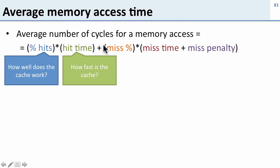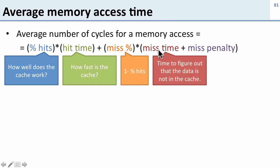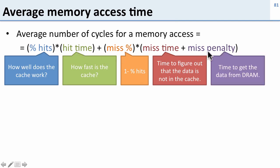Then we add in the part of performance due to cache misses. We take the percentage of misses — which is one minus the percentage of hits — times the miss time. The miss time is the amount of time it takes to determine the data is not in the cache, usually about the same as the hit time. Then we add the miss penalty, which is the time it takes to get the data from DRAM.